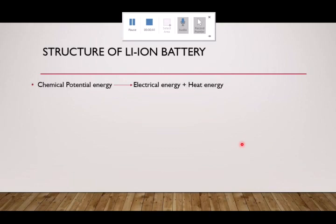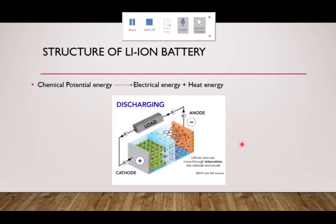It basically converts chemical potential energy to electrical energy and heat energy. Heat energy is generated by the internal resistance of the battery. Anything that's built has resistance — even air has resistance, but it's a very high resistance, almost negligible, so you can't measure it on a simple multimeter. You'd need to measure it with one of those advanced multimeters. So that's the structure of the lithium-ion battery.